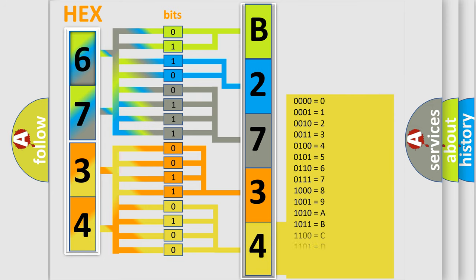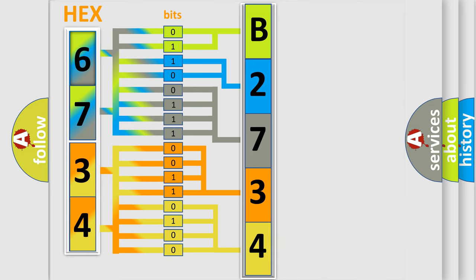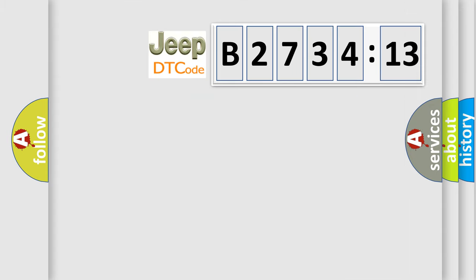A single byte conceals 256 possible combinations. We now know in what way the diagnostic tool translates the received information into a more comprehensible format.